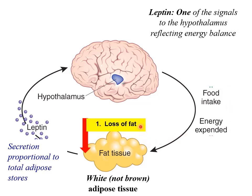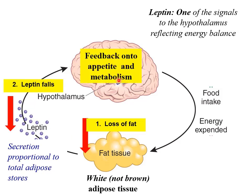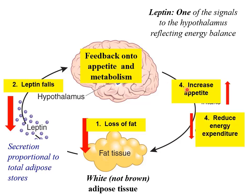So if you get thin and lose fat, less leptin is produced. Less leptin means less feedback onto the hypothalamus, which puts up your appetite and changes your metabolism, reducing energy expenditure. You put weight back on. This is a nice feedback cycle whereby fat tissue, by producing a hormone, helps regulate appetite and energy expenditure.